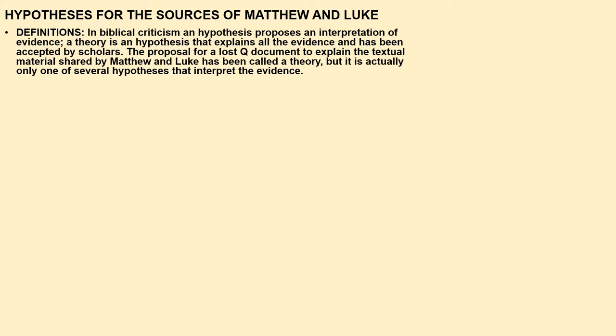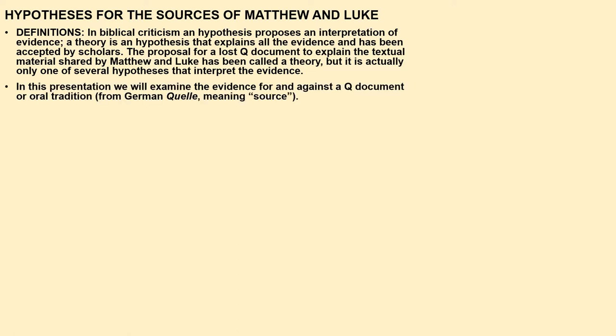A hypothesis proposes an interpretation of evidence. A theory is a hypothesis that explains all the evidence and has been accepted by scholars. The proposal for a lost Q document to explain textual materials shared by Matthew and Luke has been called a theory, but is actually only one of several hypotheses. We'll examine the evidence for and against a Q document or oral tradition — Q coming from the German word meaning 'source.' It's redundant to say 'the Q source'; we can say a Q document or Q tradition.